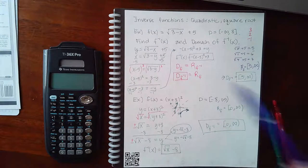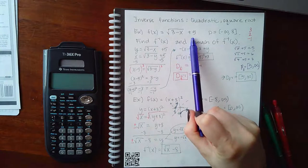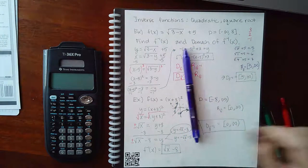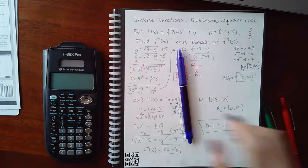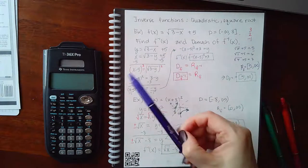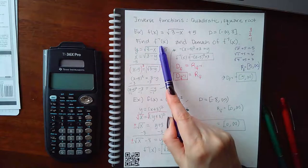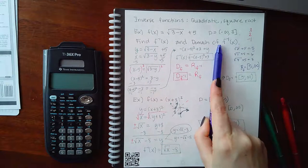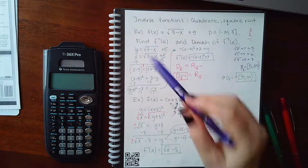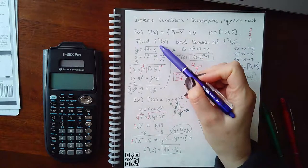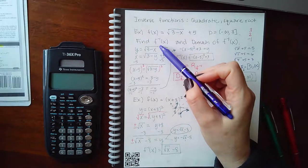Here we have f of x equals the square root of 3 minus x, plus 5, with the domain given on the right-hand side. They're asking us for two things: find the inverse of f, and find the domain of the inverse of f. To find the inverse, we'll use the strategies outlined in algebra.